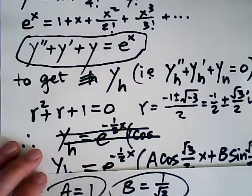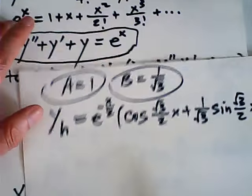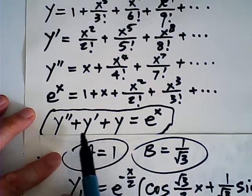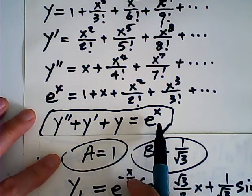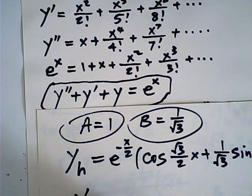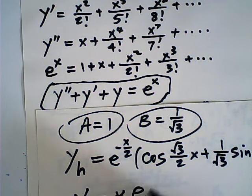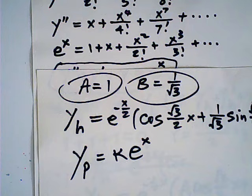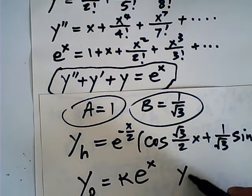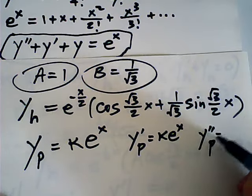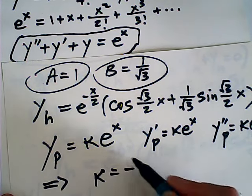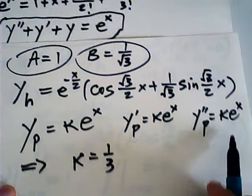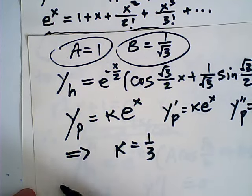Now we also need to find a particular solution. That's easy, because y'' plus y' plus y equals e^x. Therefore, my particular solution must be of the form y_p equals k times e^x. Substituting: y_p prime equals k e^x and y_p double prime equals k e^x. So 3k e^x equals e^x, which gives k equals one third.